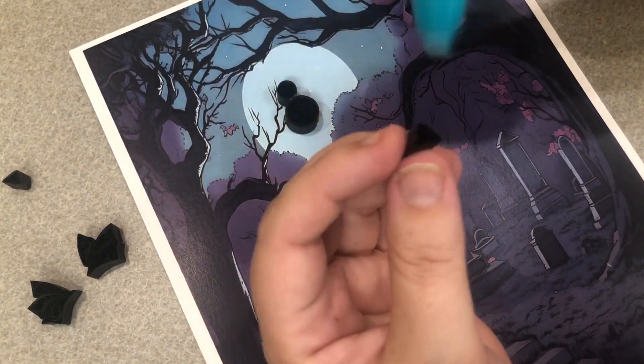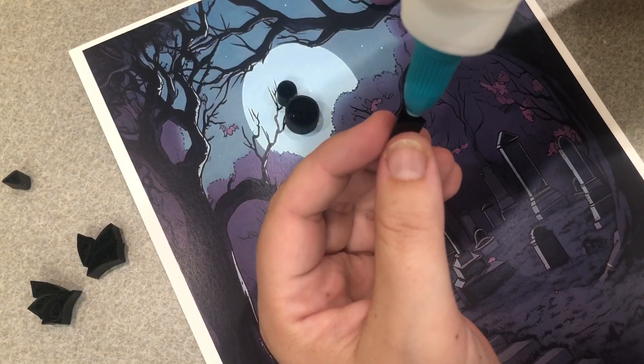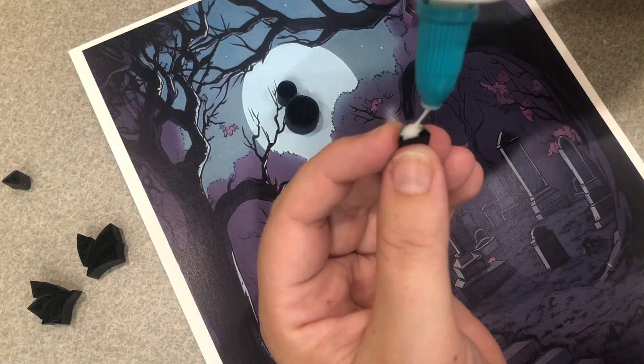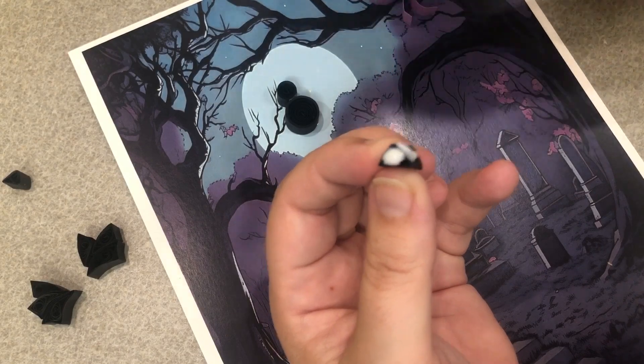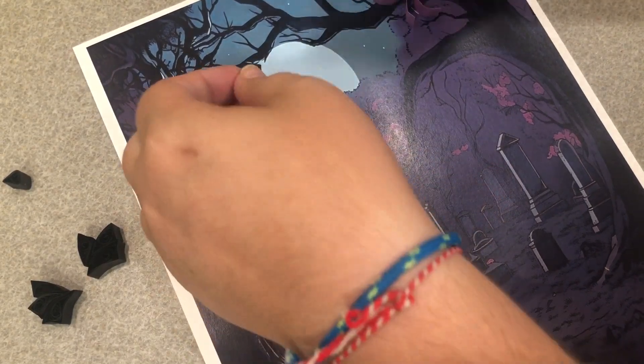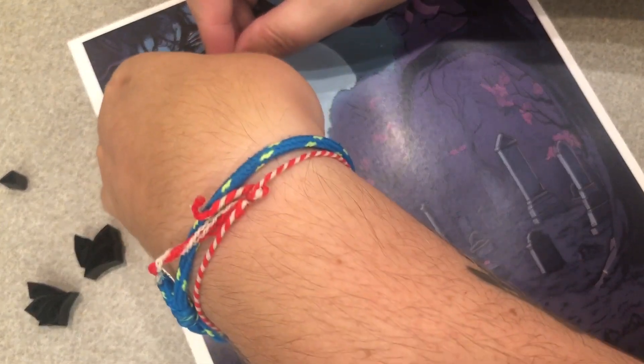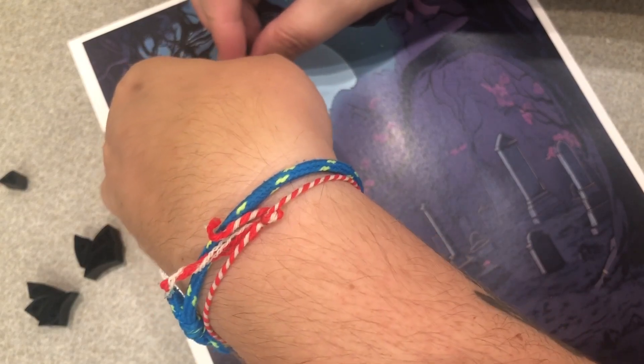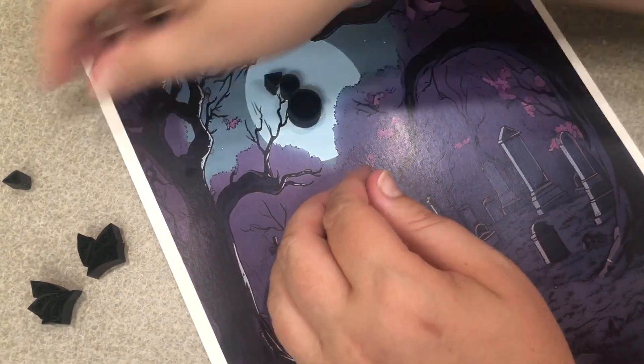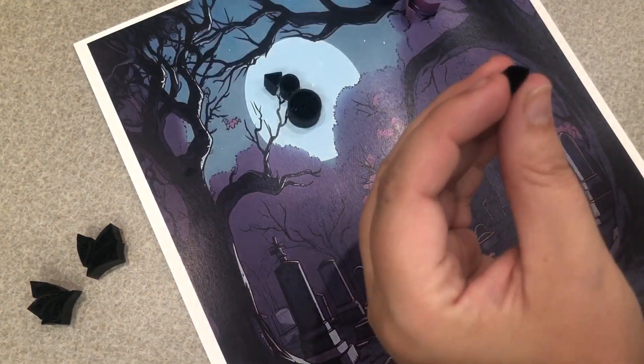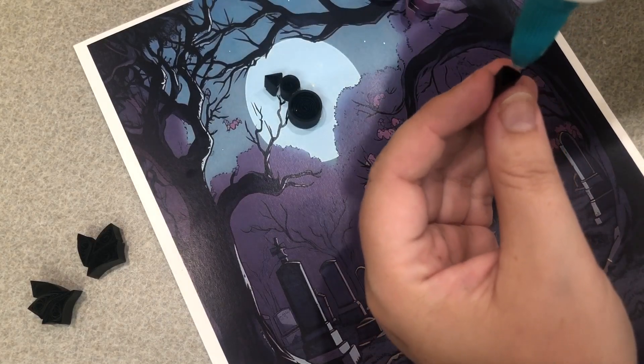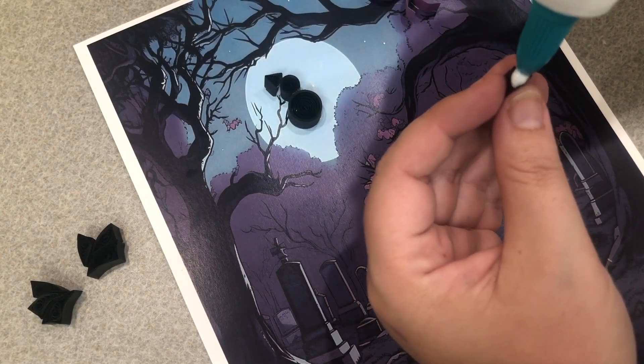For the ears, we'll do the same, just a little bit of glue on the back and on the bottom of the triangle where it is going to touch the bat's head. We'll do that for the other ear as well.